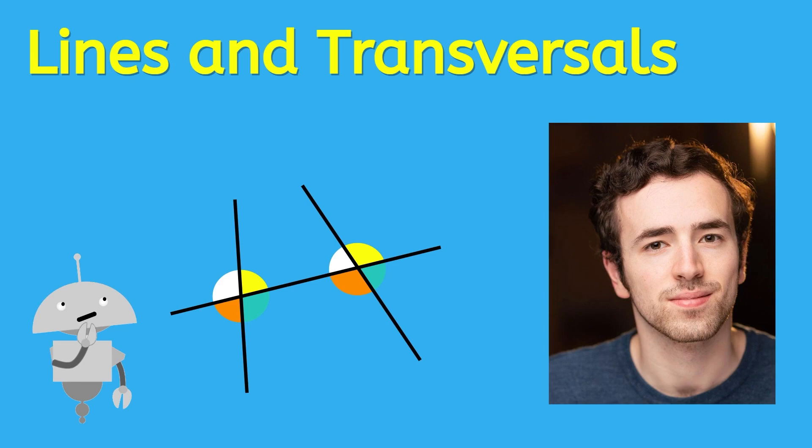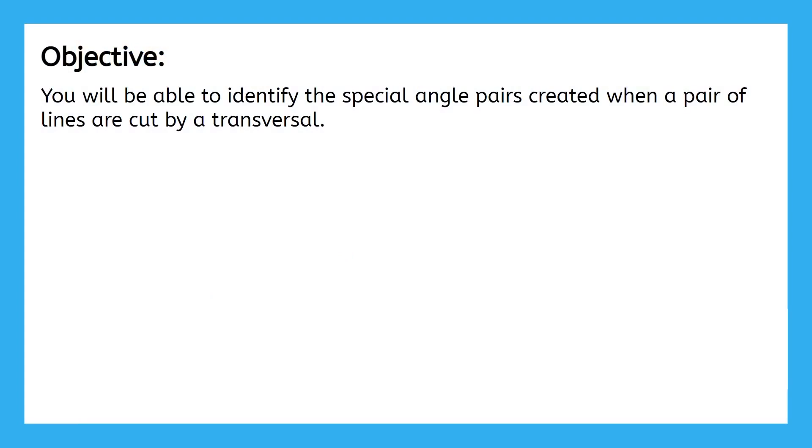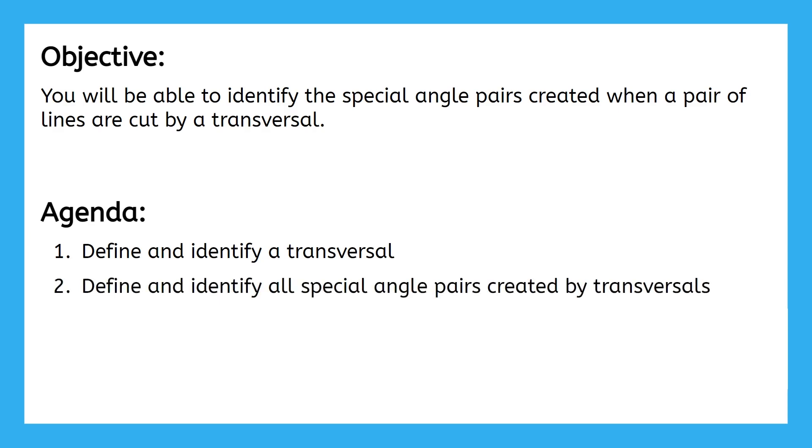This is the first of two lessons about transversals. By the end of this lesson, you will be able to identify the special angle pairs created when a pair of lines are cut by a transversal. First, we'll define and identify a transversal. Next, we'll define and identify all special angle pairs created by transversals. Finally, we'll complete one big practice problem.